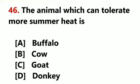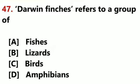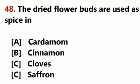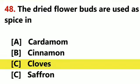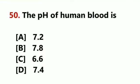The animal which can tolerate more summer heat is goat. Darwin's finches refer to a group of birds. The dried flower buds are used as a spice in cloves. Which plant is called Herbal Indian doctor? Amla. The pH of human blood is 7.4.